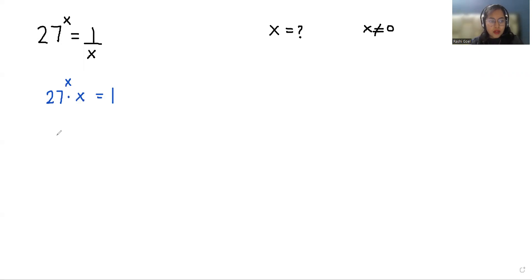Now, we can write 27 as 3^3, so (3^3)^x times x equals 1.